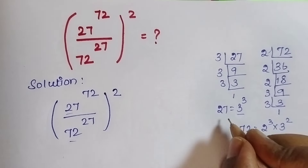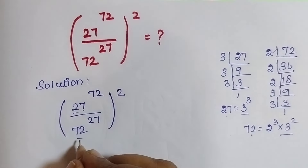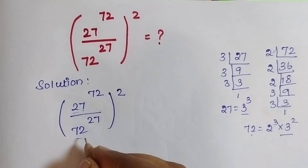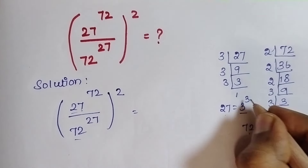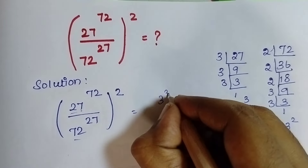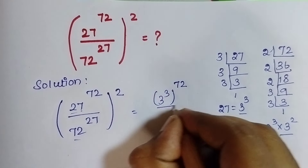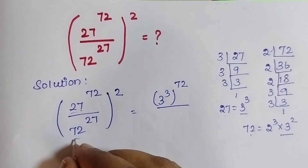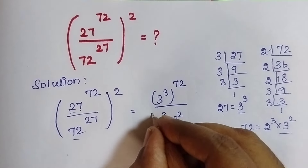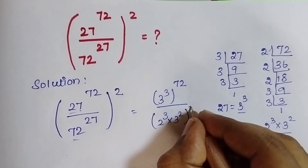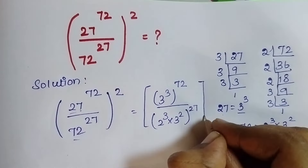Now just substitute these two values in place of 27 and 72. That is, this 27 becomes 3 cubed, and this 72 becomes 2 cubed times 3 squared. So the expression becomes: 3 cubed to the power of 72, divided by 2 cubed times 3 squared to the power of 27, the whole squared.